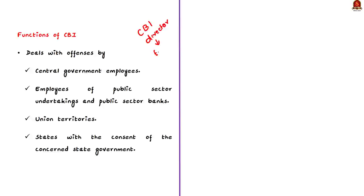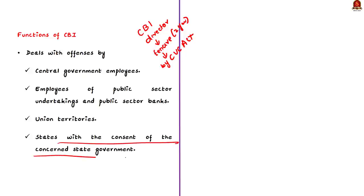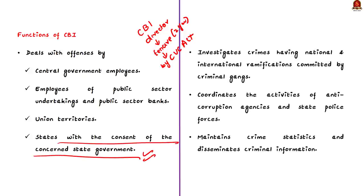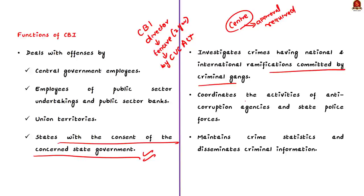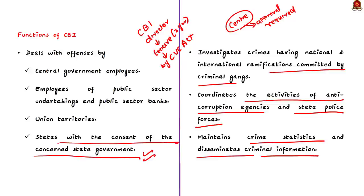The CBI deals with offenses by central government employees, employees of public sector undertakings, and public sector banks. Its jurisdiction is extended to union territories and can be extended to states with the consent of the concerned state government. The CBI needs prior approval of the central government before conducting inquiry into offenses committed by officers of the rank of Joint Secretary or above. It also investigates crimes having national or international ramifications committed by criminal gangs, coordinates activities of anti-corruption agencies and state police forces, and maintains crime statistics.